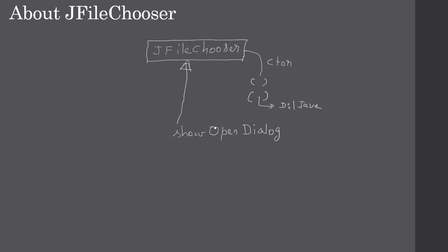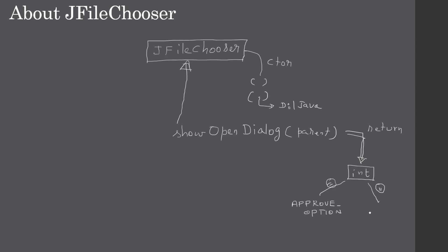Once the object is constructed, you can make a call to showOpenDialog and supply a parent. The parent can be any top-level container or window, like a JFrame or JDialog. The function will return an integer.